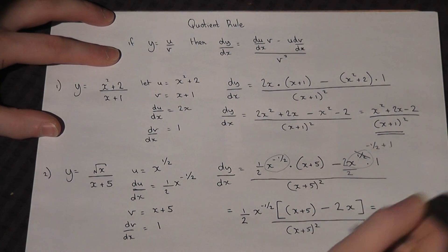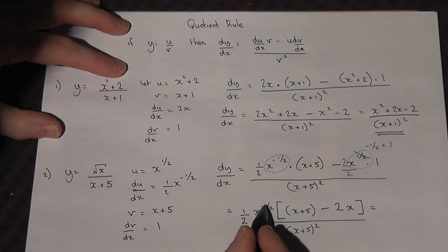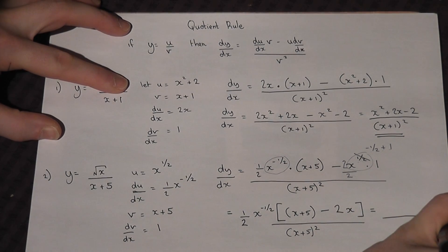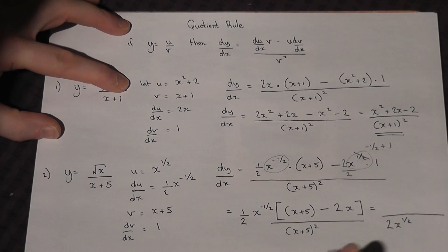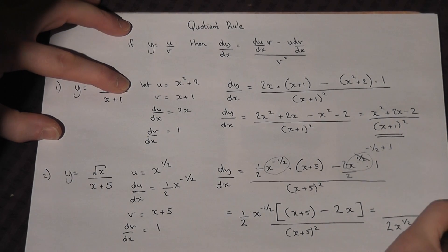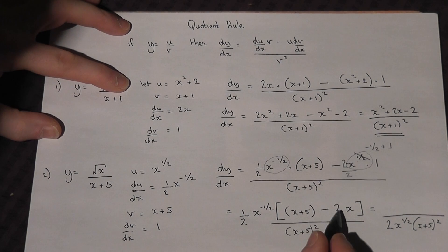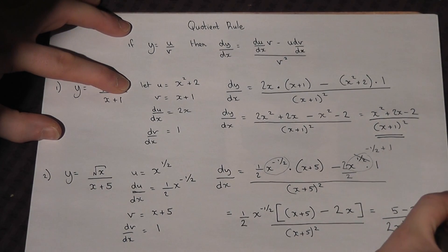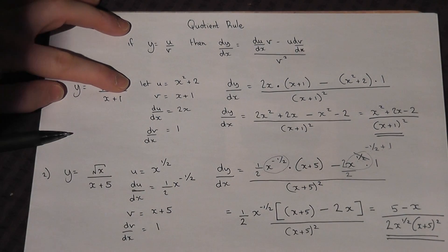So to finish off with, the half joins the x plus 5 squared. The minus power also goes to the bottom. So I get a big fraction line. I've got the 2, I've got the x to the power of 1 half, I've got the x plus 5 squared. And on top, I've got x plus 5, take away 2x, which is just 5 take away x. And that function has therefore been differentiated.